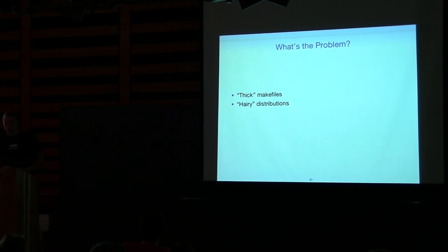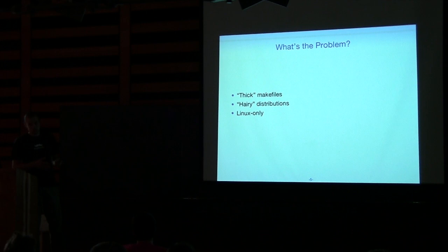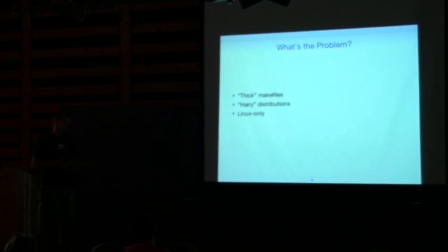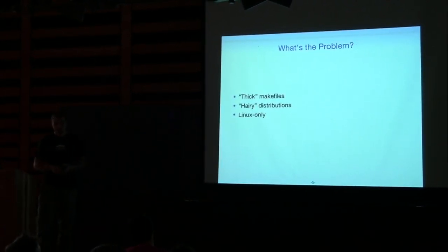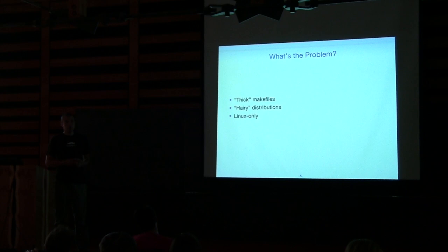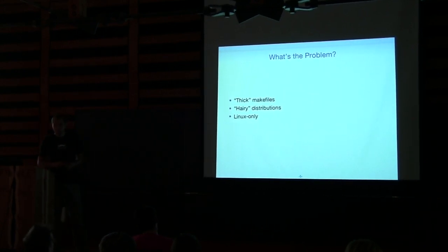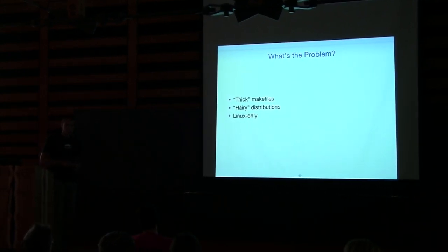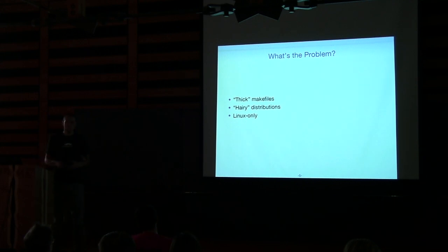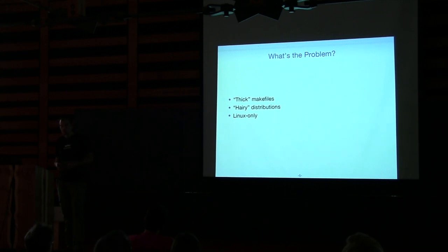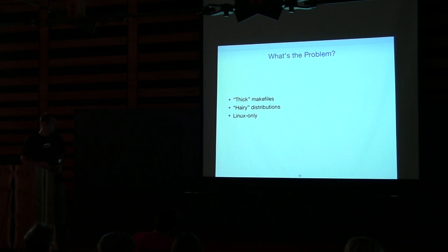The only sure way to fix the hairy distributions problem is to use a unified build system. And it's not going to be easy to do with Build because it's fairly Linux-centric. GNU Make itself is Linux or more generally Unix-centric. Yes, it's been ported to Windows, but if you've tried it, you don't want to use it on Windows.